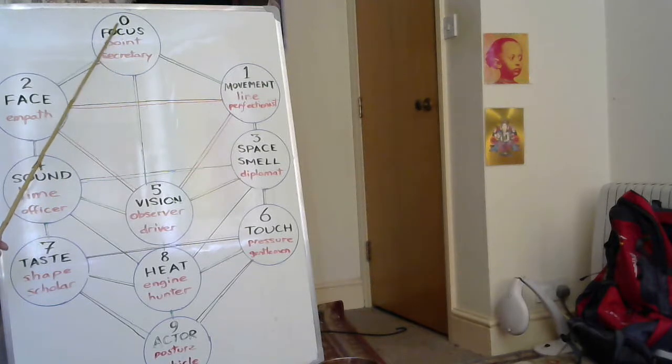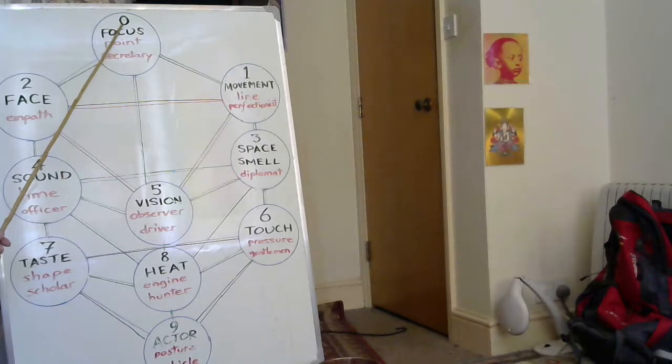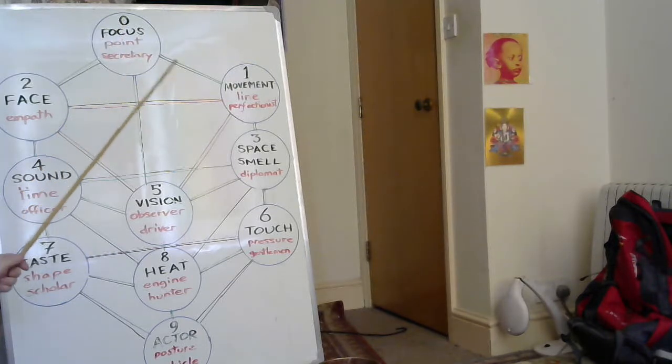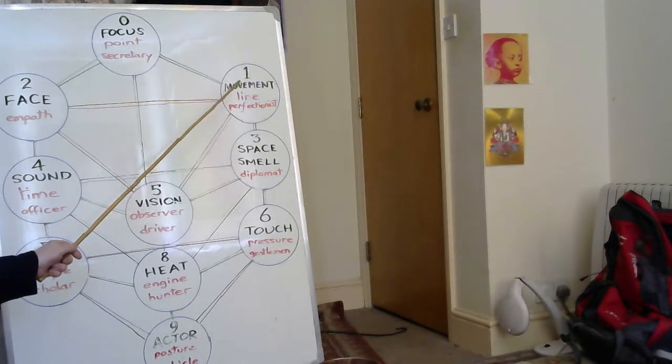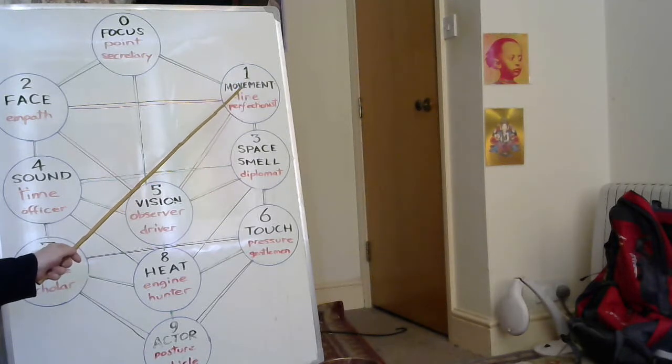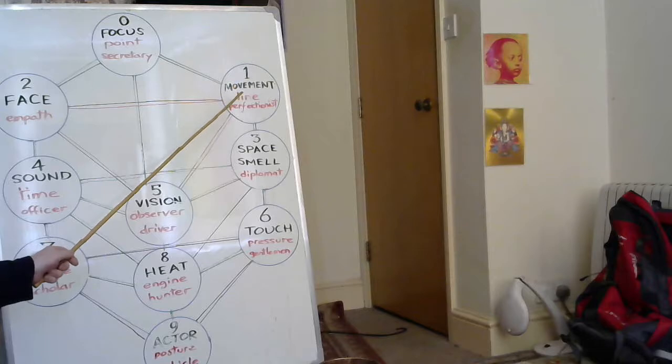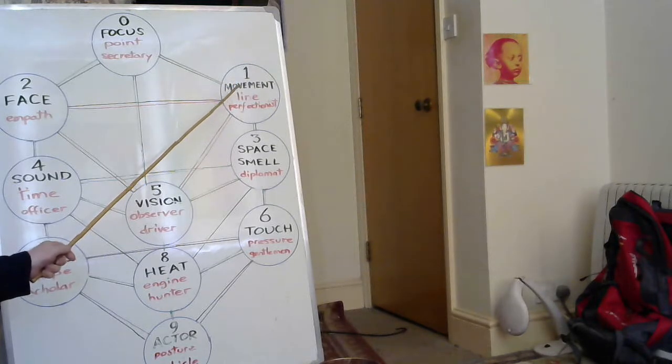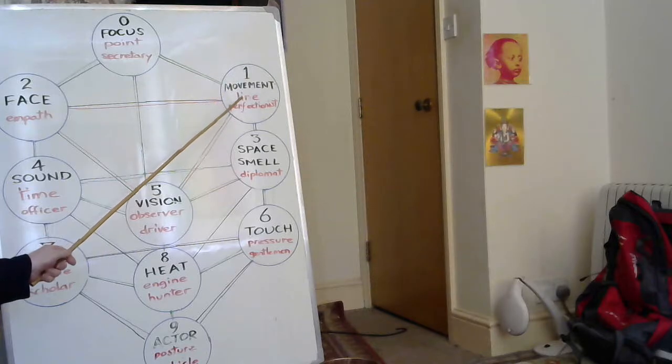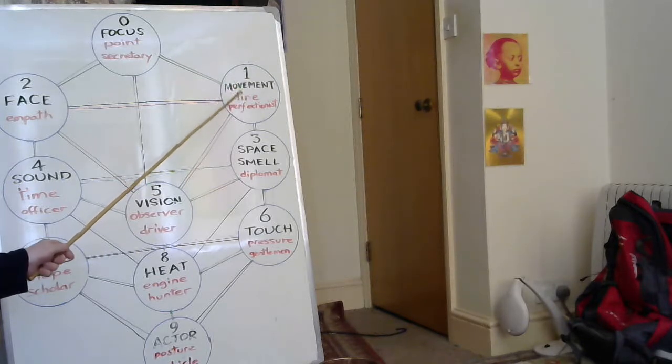So this is the zero dimension, the point. When that point moves, we get a line, the first dimension. We sense movement—we're very sensitive to movement. We jump at a movement, our eyes are attracted to a movement. Movement, this is the line. So we sense movement.